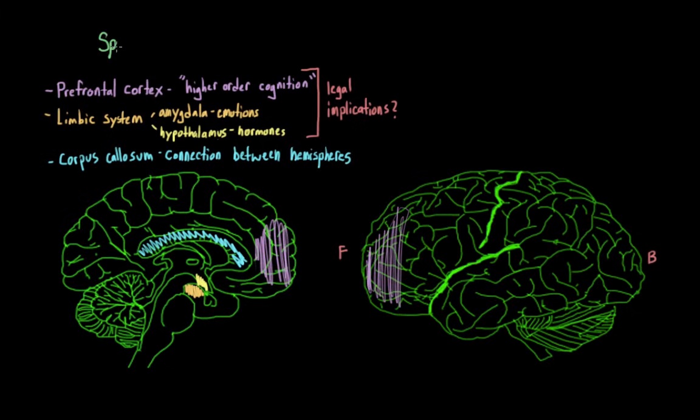So we see changes to those specific brain areas. But there are also other, more global changes that are happening in the brain during this period, or changes that are happening throughout the brain.